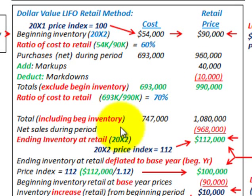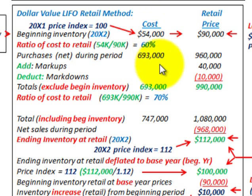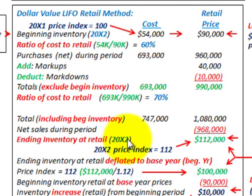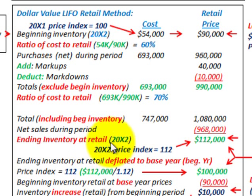To determine our ending inventory at retail for year 20x2, we take our totals including beginning inventory: cost $693,000 plus $54,000 gives us $747,000, and at retail that's $990,000 plus our $90,000 beginning inventory giving us $1,080,000. Our ending inventory at retail for 20x2 would subtract out net sales for the period of $968,000, giving us an ending inventory at retail of $112,000.